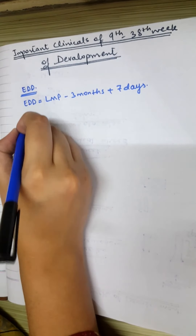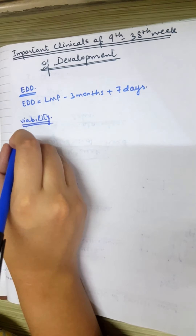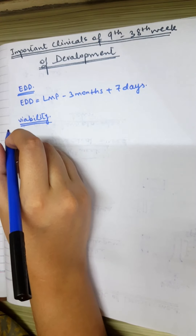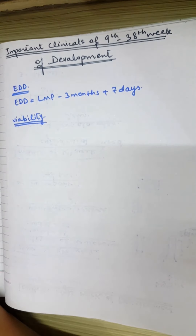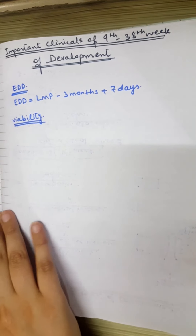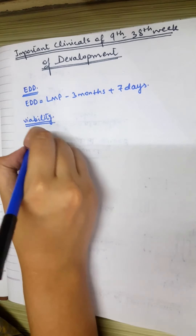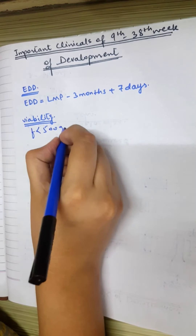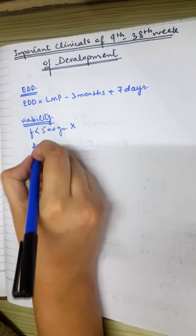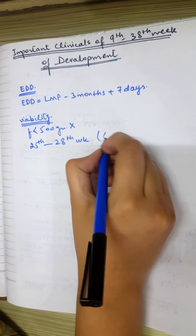Next is viability. Viability of the fetus means its chance to survive in the extra-uterine environment, particularly after premature birth. The viability of the fetus begins between the 25th to 28th week, which is approximately 6 months. Below 500 grams at birth, viability is very low.